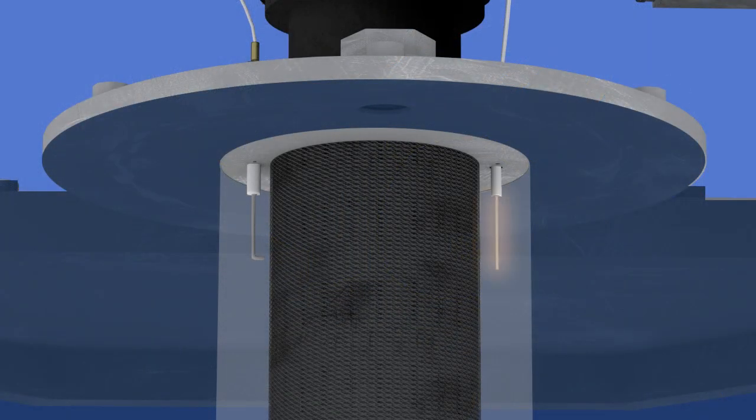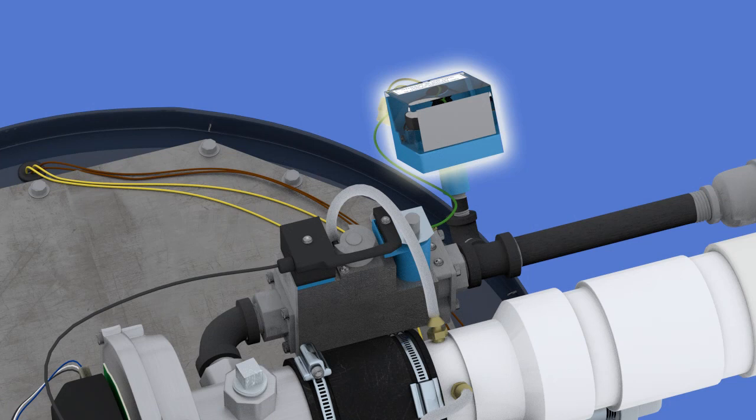5 seconds into pre-purge, the hot surface igniter is energized and warms up for 20 seconds. If the normally open, low gas pressure switch is closed, the gas valve is energized.